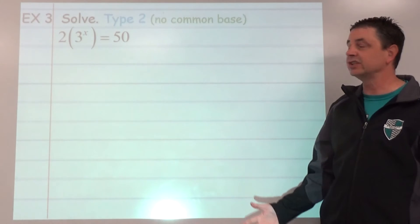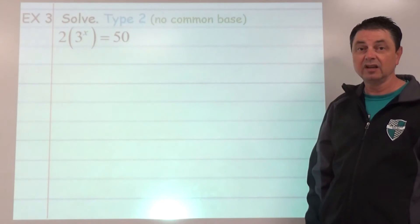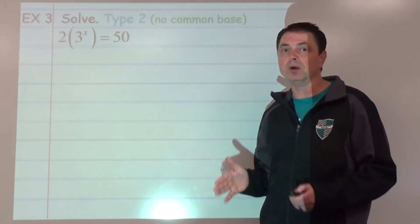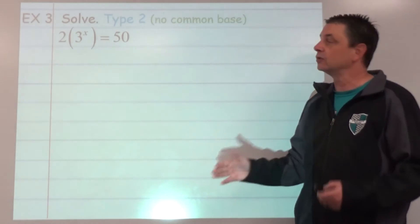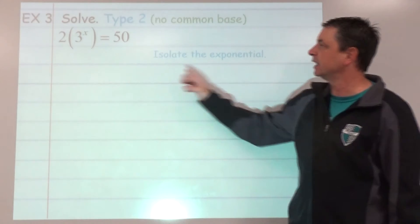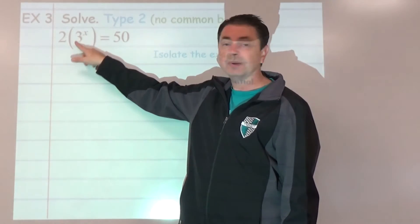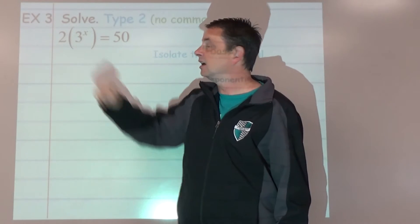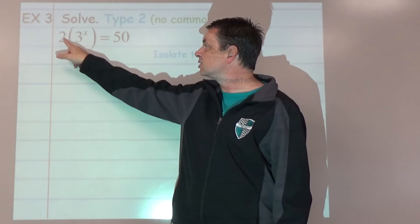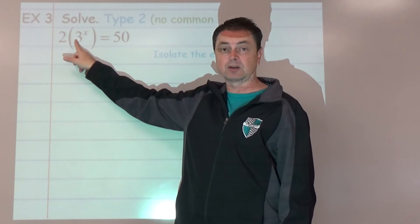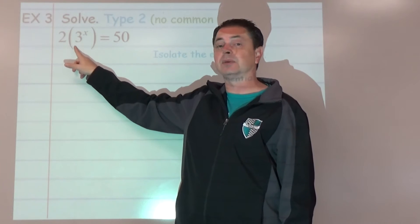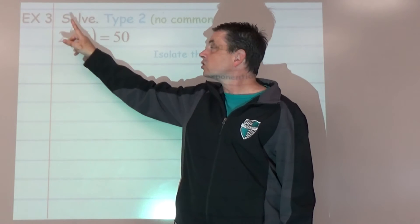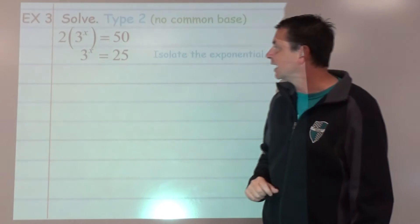Example 3, what if there is no common base? Even before we try to recognize if there's a common base, we must isolate. Our first step here is to isolate the exponential, meaning 3 to the power of x. We want to get rid of anything outside of that like the 2. We would not be allowed to multiply the 2 and the 3 together to make 6 because they don't share the same exponent. So we're going to divide both sides by 2 to get rid of that.